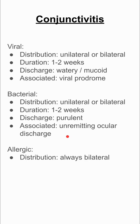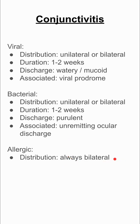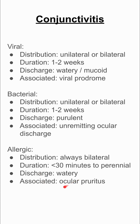Lastly, allergic conjunctivitis. Distribution here is always bilateral, so if it's unilateral conjunctivitis, it's not allergic. Duration ranges from less than 30 minutes to perennial — it could happen quickly after exposure to pollen, or it could be seasonal, occurring every spring for two months at a time. The discharge is watery with no pus, and it's associated with ocular pruritus, meaning itchy eyes.